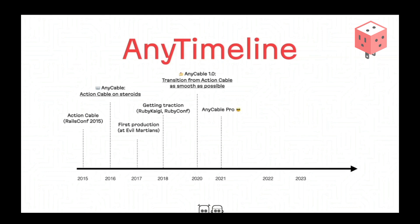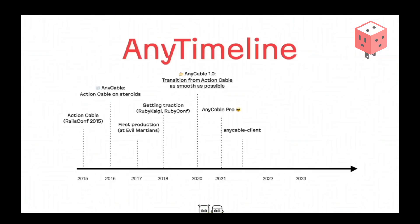In 2021, we released the Pro version, which included more performance-oriented features like binary protocol support, less memory consumption, and so on — targeting larger AnyCable installations. That same year, we made a first step toward separating from Rails by releasing our official AnyCable client SDK, which works in any JS runtime — Node.js, React Native, or just the browser. That was a required step toward AnyCable 2.0, which should be a standalone framework, not just an Action Cable add-on.